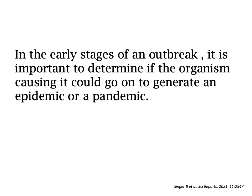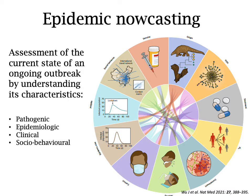In the early stages of an outbreak, it is important to determine if the organism causing it could go on to generate an epidemic or a pandemic. For that, we have epidemic nowcasting, which is broadly speaking the assessment of the current state of an ongoing outbreak by understanding its characteristics — including the pathogenic, epidemiological, clinical, and socio-behavioral factors that play into the development of an ongoing outbreak.